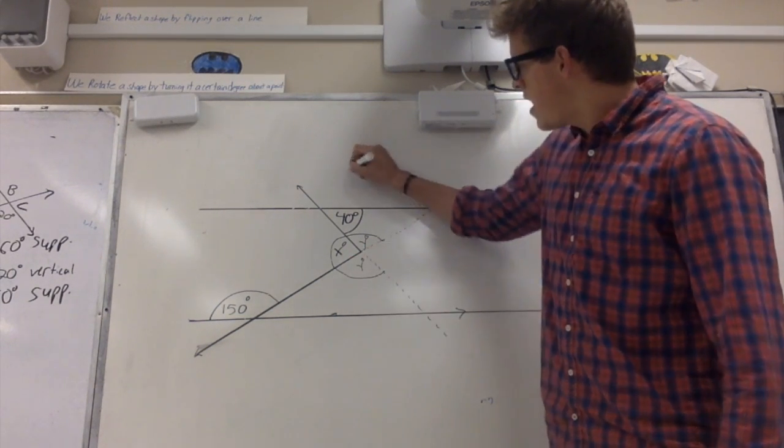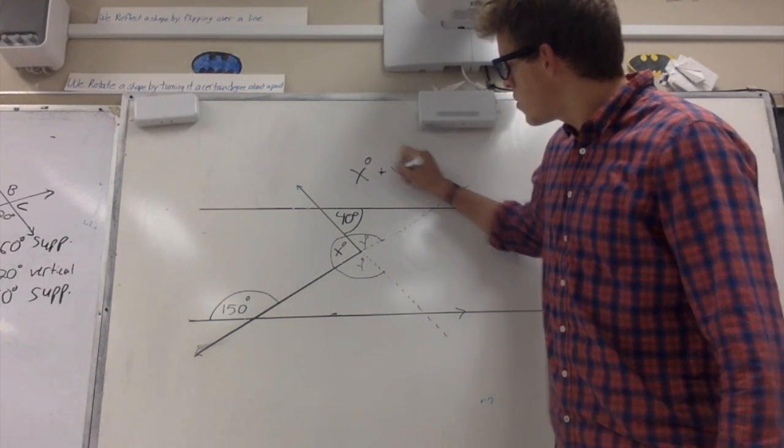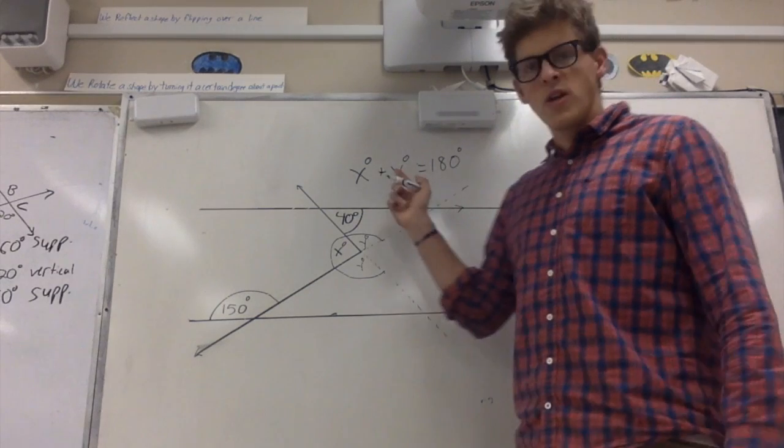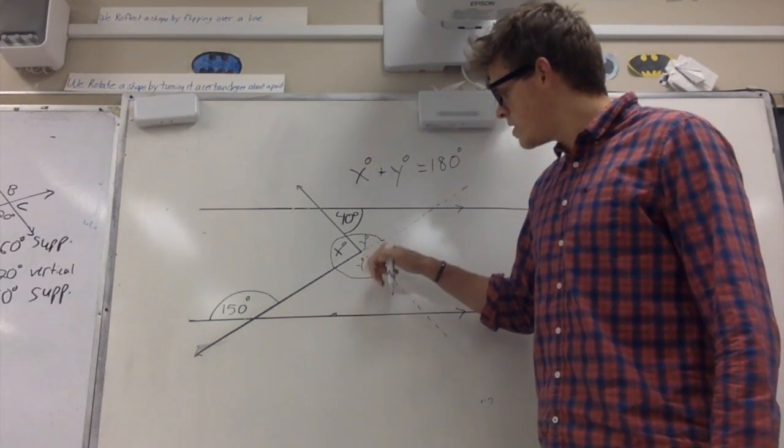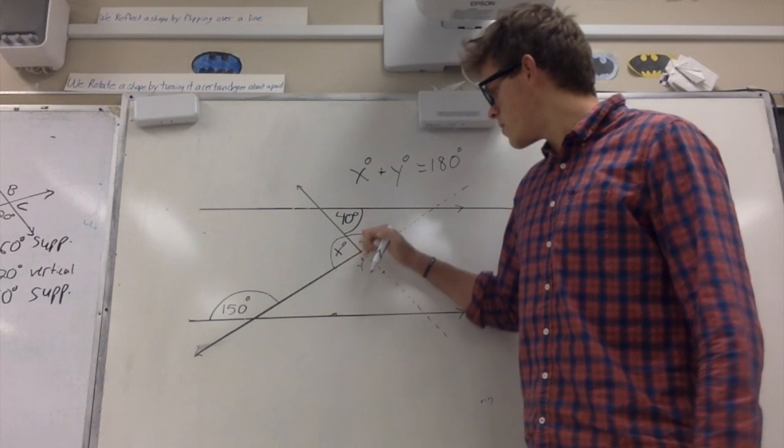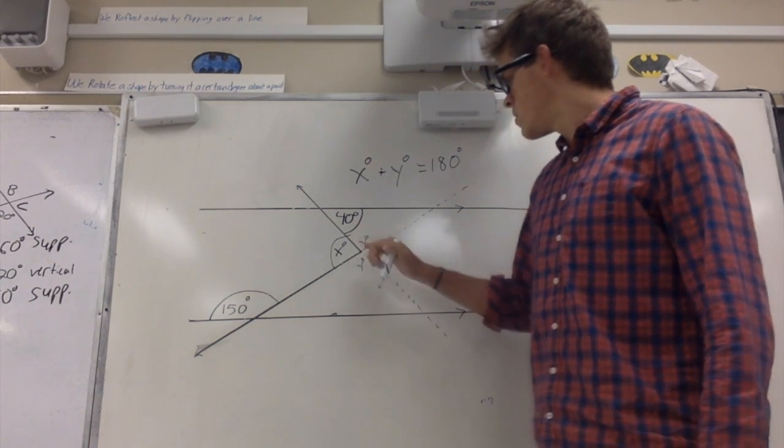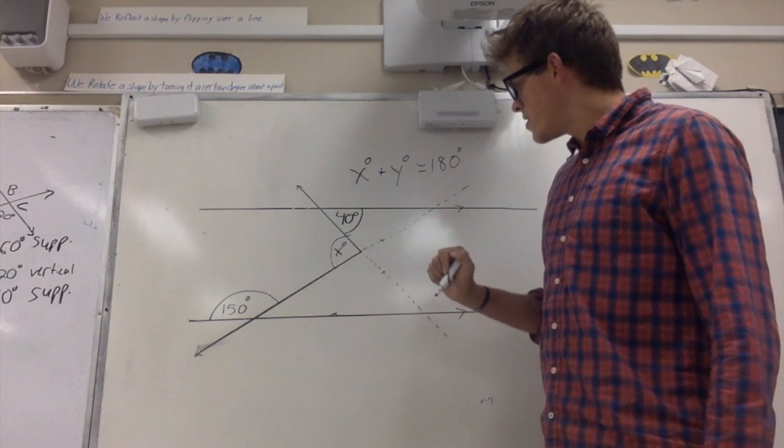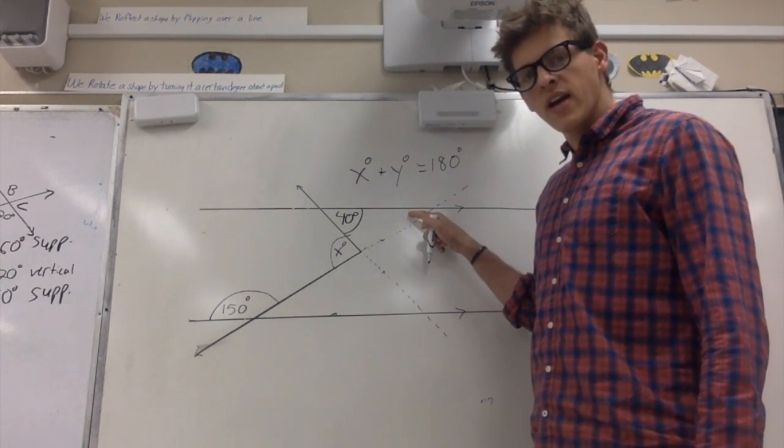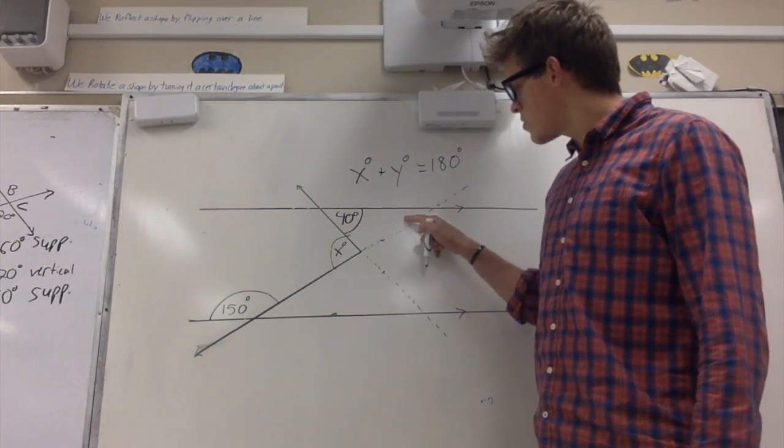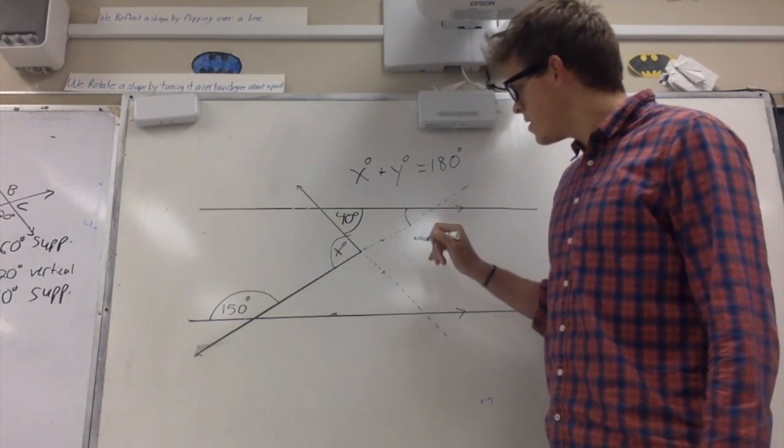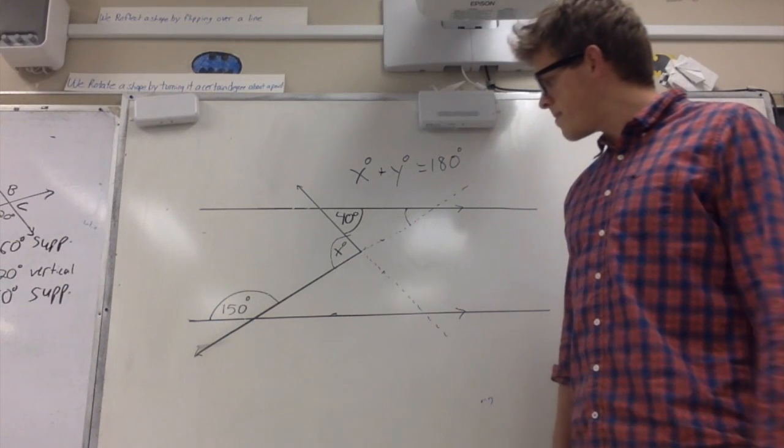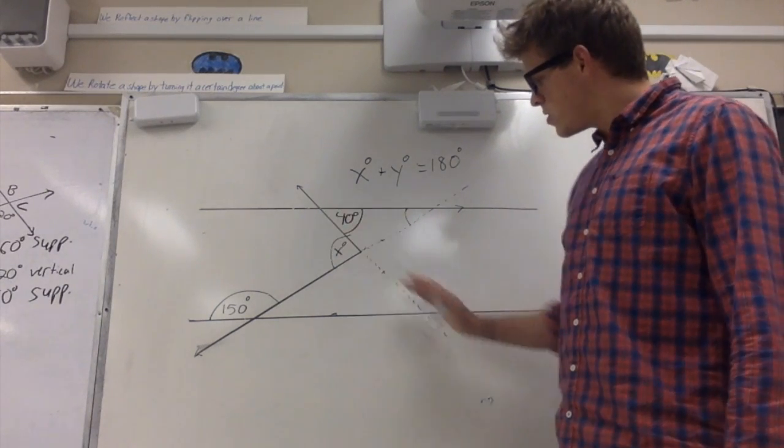So x degrees plus y degrees equals 180 degrees, and we know that we can solve for one of these two. So let's try to figure that out. We got 40 degrees in here. The question is how can I accomplish getting this many degrees right here? The only other hint we have is this 150 down here.